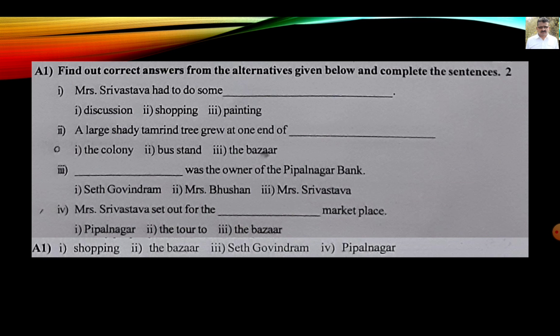Activity A1: find out correct answers from the alternatives given and complete the sentences. Mrs. Srivastava had to do some — answer: shopping. A large shady tamarind tree grew at one end of the bazaar. Dash was the owner of the Pippal Nagar bank — answer: Seth Govindram. Mrs. Srivastava set out for the dash Pippal Nagar marketplace.